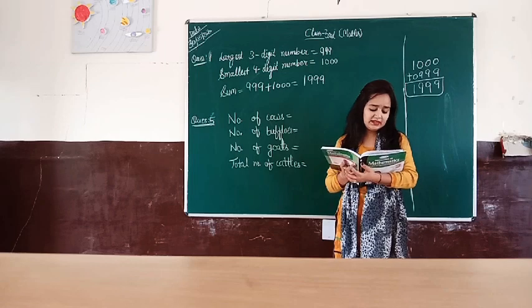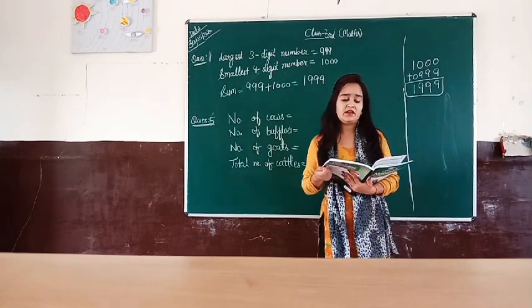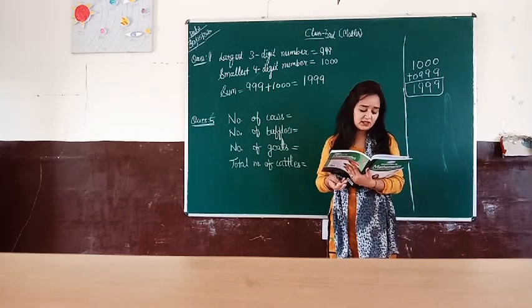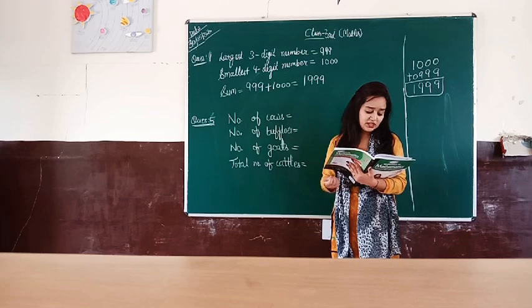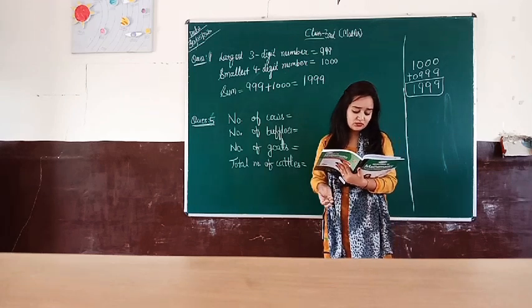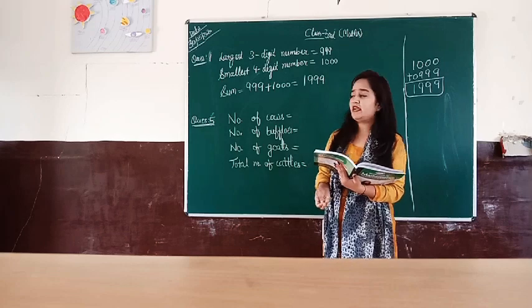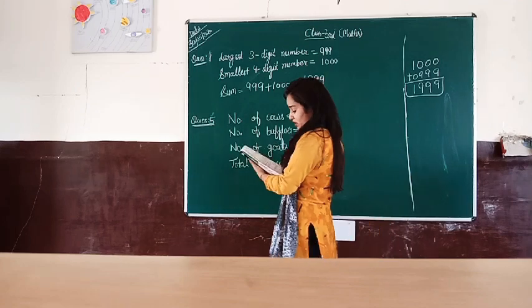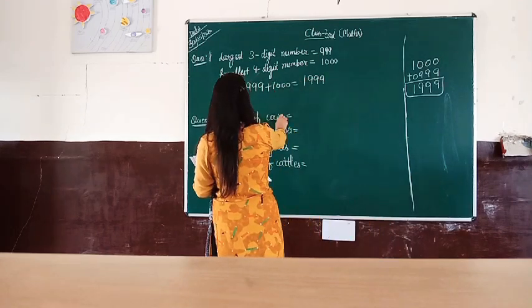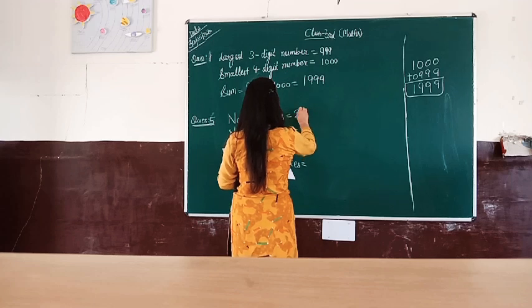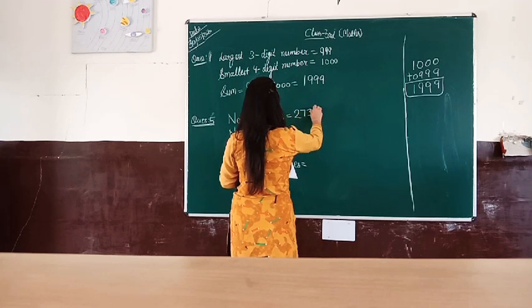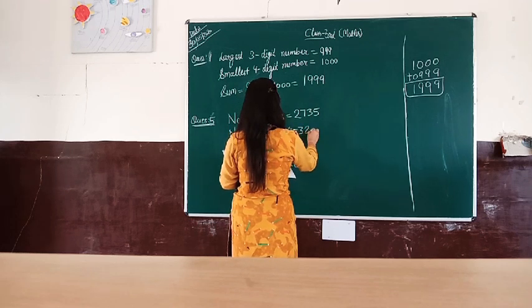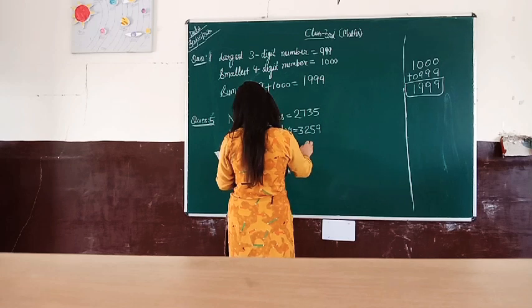How many cattle are there? We need to find the total number of cattle. Number of cattle equals 2,735 plus 3,259 plus 526.